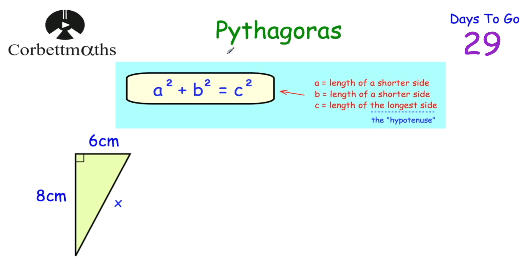So today's topic is Pythagoras. Pythagoras's theorem is A squared plus B squared equals C squared, where A and B are the lengths of the two shorter sides of the right-angled triangle, and C is the length of the hypotenuse — the longer side of the right-angled triangle. Here we've got a right-angled triangle and we're going to use Pythagoras's theorem to find the length of this diagonal. Feel free to press pause and try the question yourself.